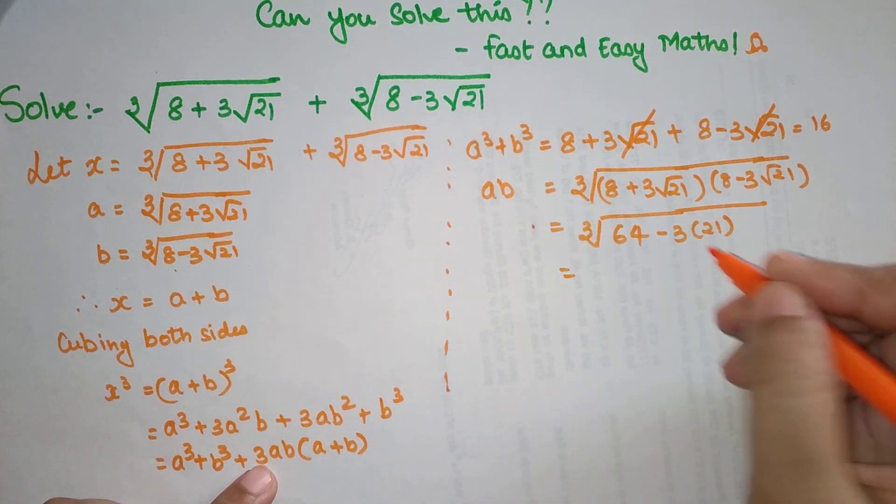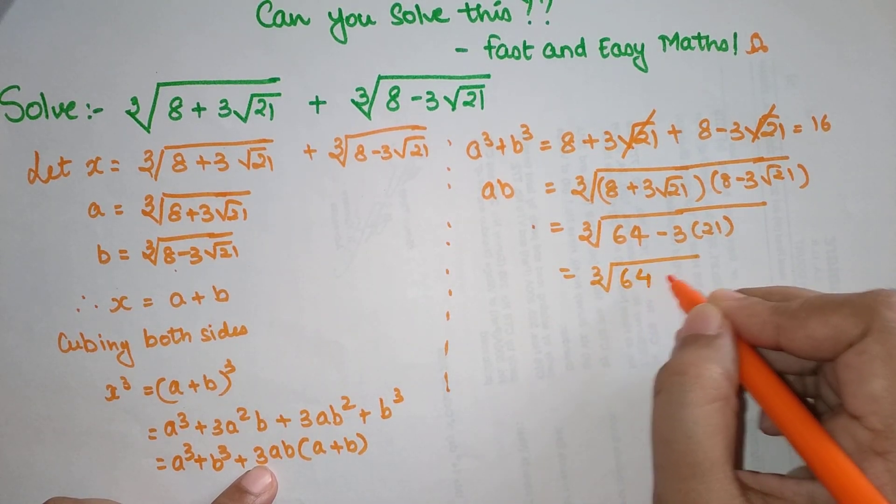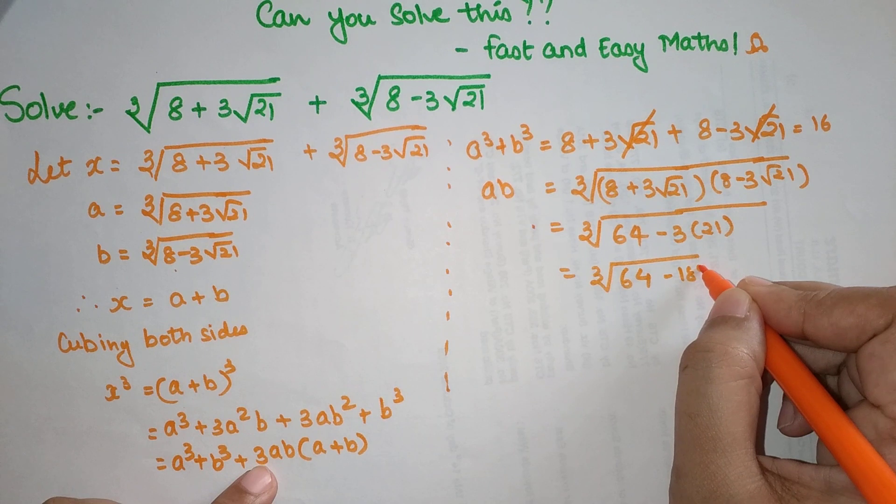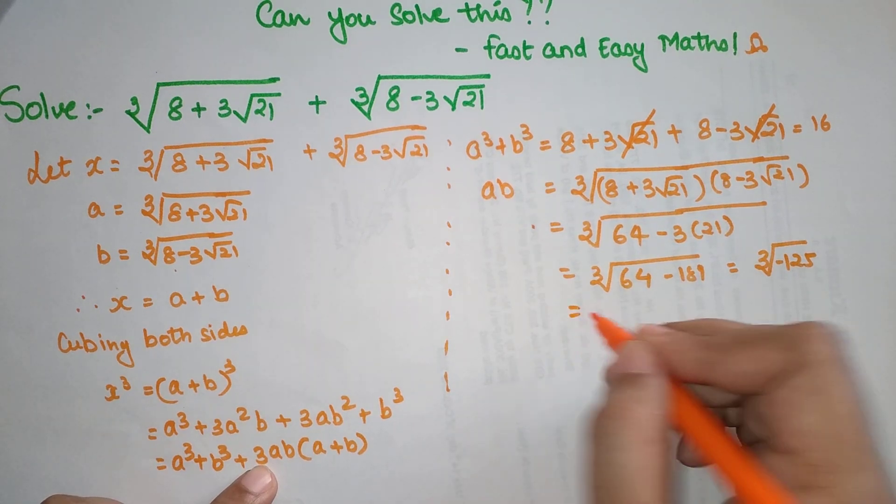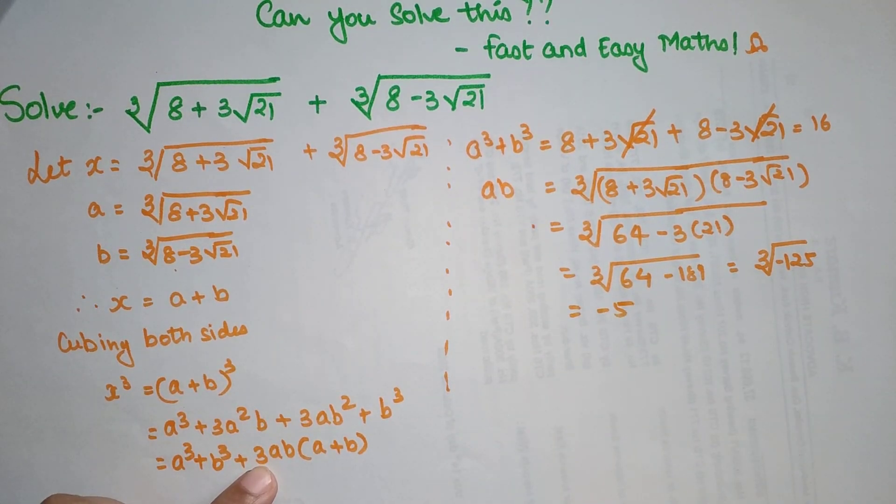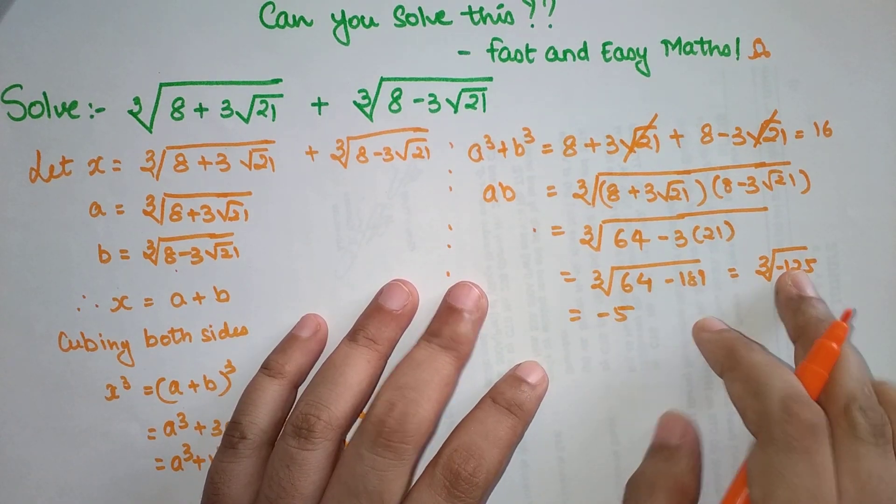This is cube root of 64 minus 3 into 21, which comes out to be cube root of minus 125, which equals minus 5.